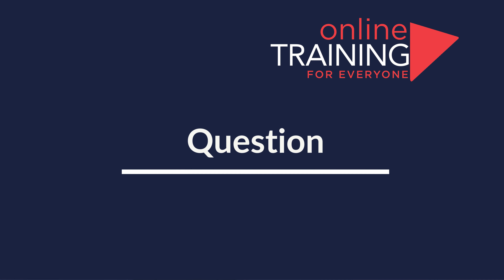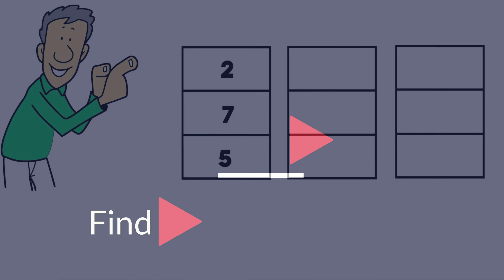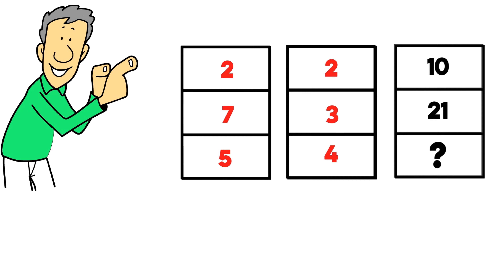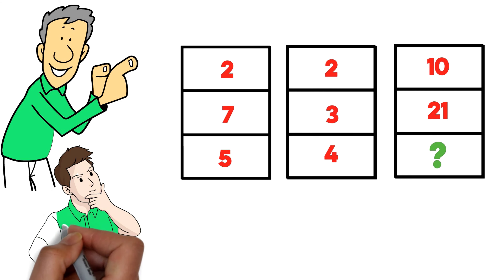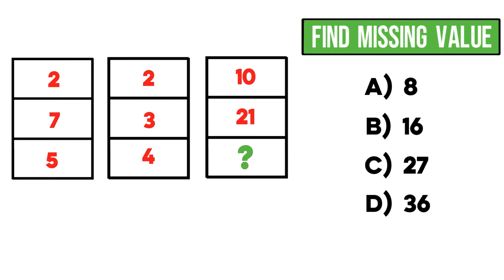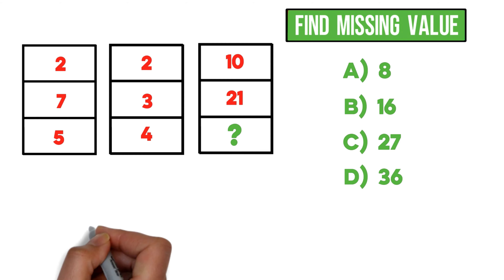Here's an interesting question that tests your pattern recognition skills. You're presented with three columns, each with three numbers. The first column has 2, 7, 5; the second column has 2, 3, 4; and the third column has 10, 21, and a missing number. You need to find the missing value from choices: A) 8, B) 16, C) 27, and D) 36.